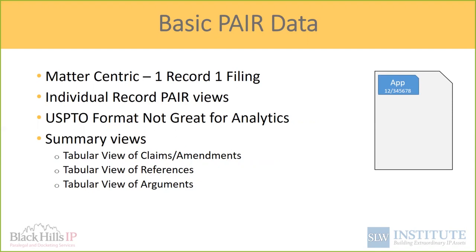The next report is basic PAIR data — taking a look at accumulated data for the matter being prosecuted, to glean insights based on the history from that matter. It's a very matter-centric report, one record. If you pull the data straight from the patent office, the format isn't great for analytics. Some reviews for this data can be useful: seeing claims and amendments as they've progressed through prosecution, references that have been used, maybe pulling in some family data, and some of the arguments that have come in.